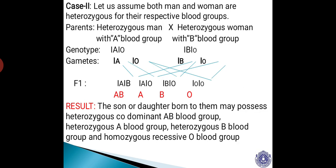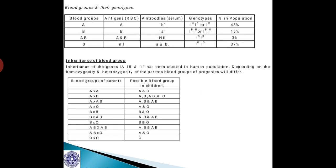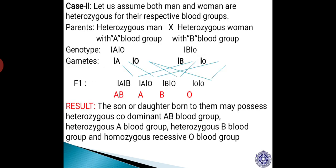The result is as follows: the son or daughter born to them may possess heterozygous co-dominant AB blood group, heterozygous A blood group, heterozygous B blood group, and homozygous O blood group. These are the possible children produced by a marriage between a heterozygous man with A blood group and a heterozygous woman with B blood group.